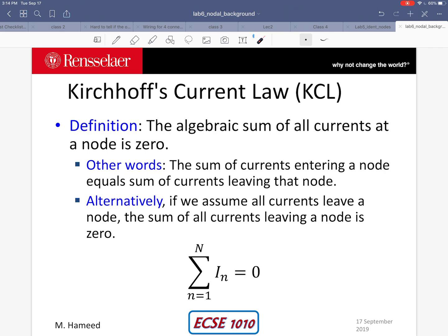But if we do assume that all the currents at a node leave the node, then you can say that the sum of all the currents leaving a node is zero because there's no current entering it. Your right-hand side is zero. So there's a very quick way to represent KCL.